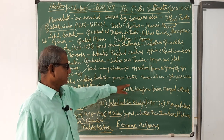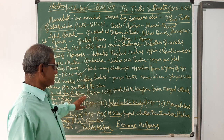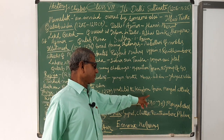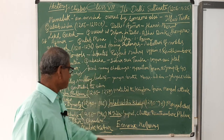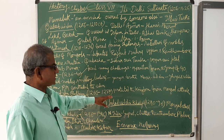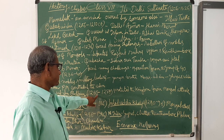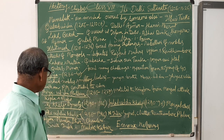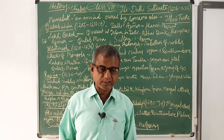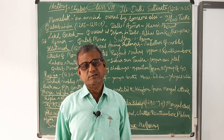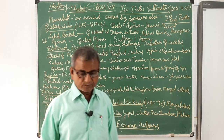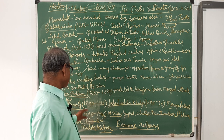After the death of Nasiruddin, Ghiyasuddin Balban ascended the throne. He was a very powerful ruler who protected the kingdom from Mongol attacks. He fortified cities and built many forts to resist Mongol invasion. He ruled from 1266 to 1287.